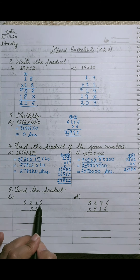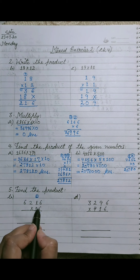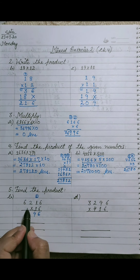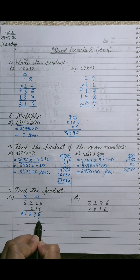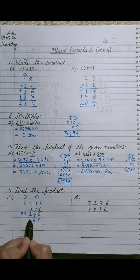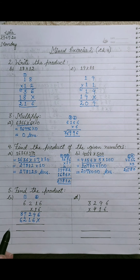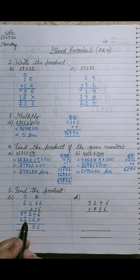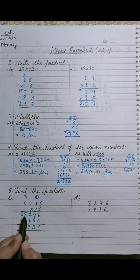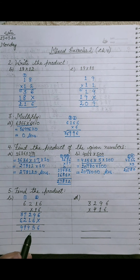Solving part B: 6216 by 16. First step — multiply 6216 by 6: 6 sixes are 36 — 6 written, 3 carries; 6 ones are 6 plus 3 is 9; 6 twos are 12 — 1 carries; 6 sixes are 36 plus 1 is 37. Mark cross sign. Second step — multiply by 1: 1 six is 6; 1 one is 1; 1 two is 2; 1 six is 6. Adding place-wise: 6, 9 plus 6 is 15, carry 1; 2 plus 1 plus 3 is 4 — wait — final answer is 99,456.